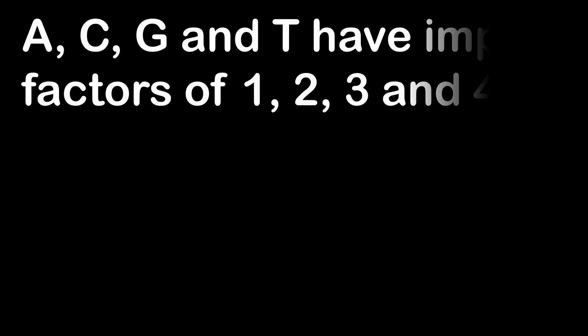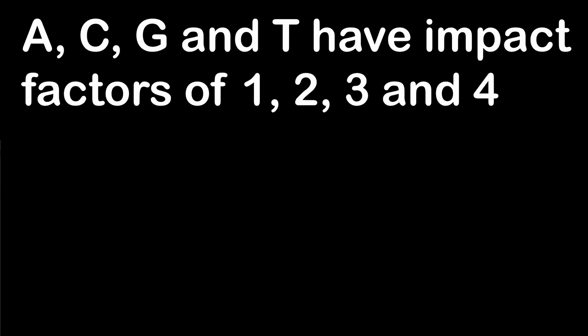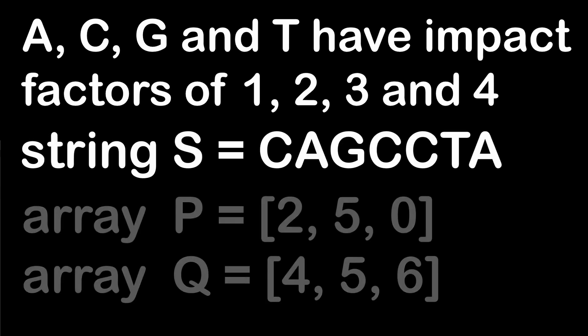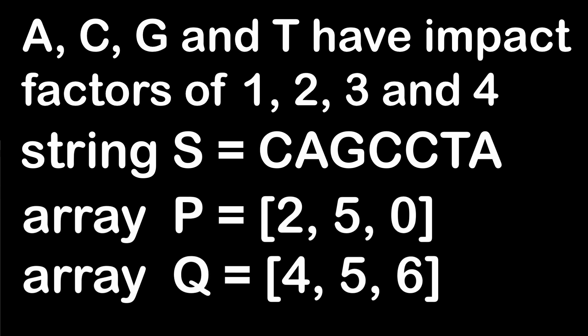First we have to consider DNA bases or nucleotides: A, C, G, and T. For each we consider an impact factor. These factors are provided as 1 for nucleotide A, 2 for C, 3 for G, and 4 for T. We are also provided a string with a sequence of letters, and the arrays P and Q, which are integers representing the starting and end positions of the slice of the string characters we want to consider.